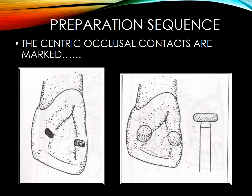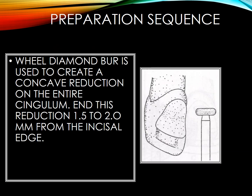Let us see the preparation sequence. First of all, before starting, we bring articulating paper and ask the patient to bite on it in centric occlusion. The centric occlusal contact will be marked. To ensure adequate occlusal clearance, we use a wheel diamond bur to remove about 0.5 mm of tooth structure. This step is very necessary for the maxillary anterior teeth. After that, a wheel diamond bur is used to create concave reduction — following the shape of the tooth — on the entire cingulum and fossa.